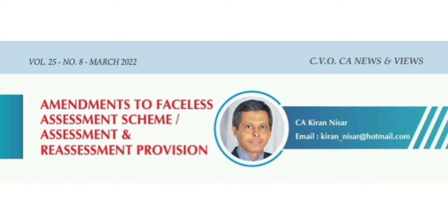On receipt of the income or loss determination proposal from the AAU, NIFAC, on the basis of guidelines issued by the Board, may either (a) convey to the AAU to prepare a draft order in accordance with the income or loss determination proposal, or (b) assign the income or loss proposal to the Review Unit through automated system for conducting review. The Review Unit shall conduct the review and forward its review report to NIFAC, which NIFAC shall forward to the AAU. The AAU, after considering the review report, shall accept or reject some or all modifications, record reasons for rejection, and prepare a draft order, which is then forwarded to NIFAC.